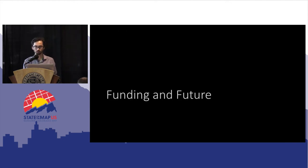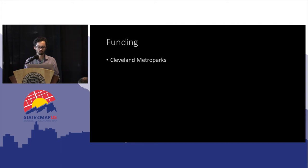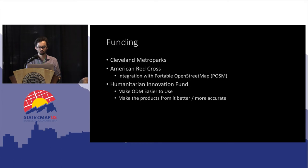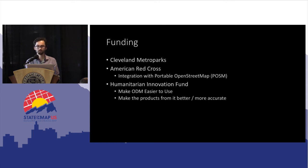What are we looking at in the future for Open DroneMap? We're funded in time by the Cleveland Metro Parks, as well as through American Red Cross through the integration with Possum. We're about three-quarters through the humanitarian innovation fund, which we've been using to make Open DroneMap easier to use and make the products better and more accurate by improving some of the algorithms and processes.